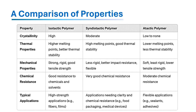This table highlights the key differences in the physical and chemical properties of isotactic, syndiotactic and atactic polymers, showing how their structure affects their usability in various applications. The choice among isotactic, syndiotactic and atactic polymers depends largely on the specific requirements of the application. Each form of polymer brings valuable properties to a wide range of industrial and commercial applications.